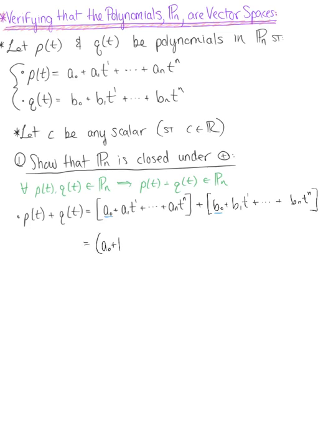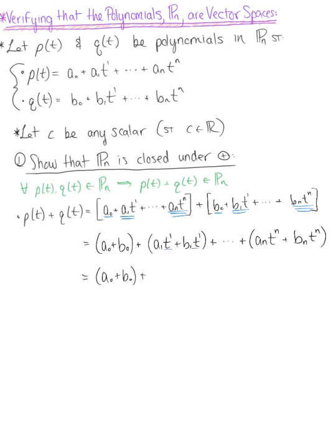We group a naught plus b naught, then the linear terms: a sub 1 times t to the first plus b sub 1 times t to the first, continuing this grouping method all the way through to the nth terms, giving us a sub n times t to the n plus b sub n times t to the n. Everything but the constants has a greatest common factor, so we factor that out. The constants stay as a naught plus b naught. The linear terms give us t times the quantity a sub 1 plus b sub 1, and we continue factoring until we get t to the n times the quantity a sub n plus b sub n.